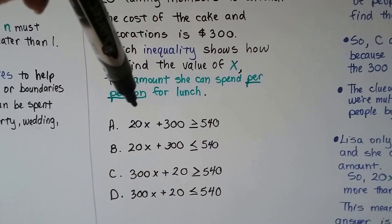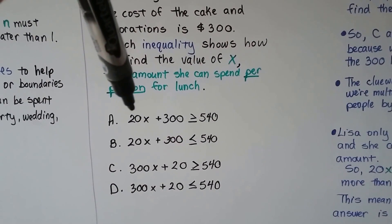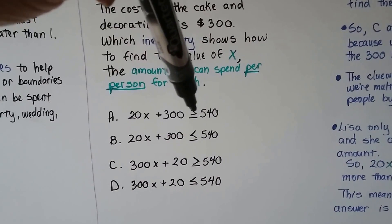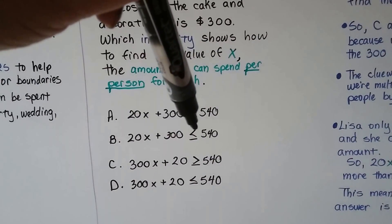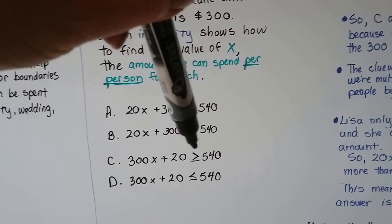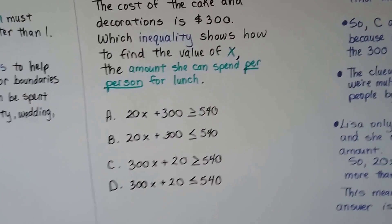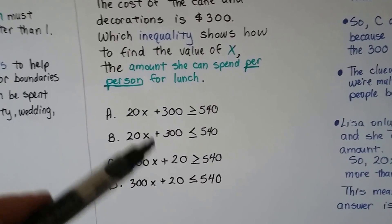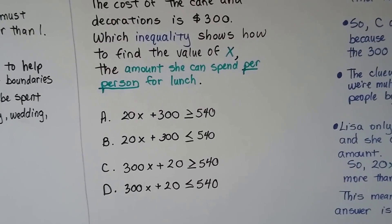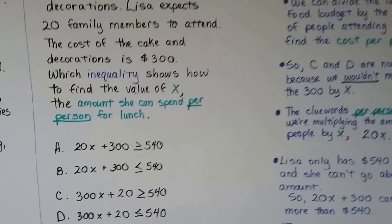We have answer choices A, B, C, and D, and we can see: A is greater than or equal to, B is less than or equal to, C is another greater than or equal to, and D is another less than or equal to. We have to figure out which one makes sense.